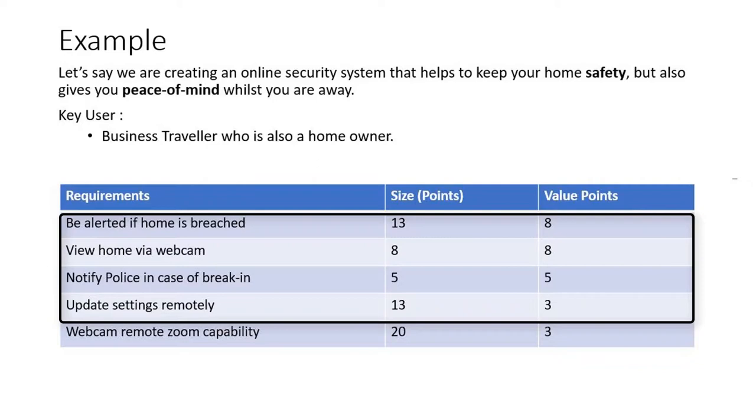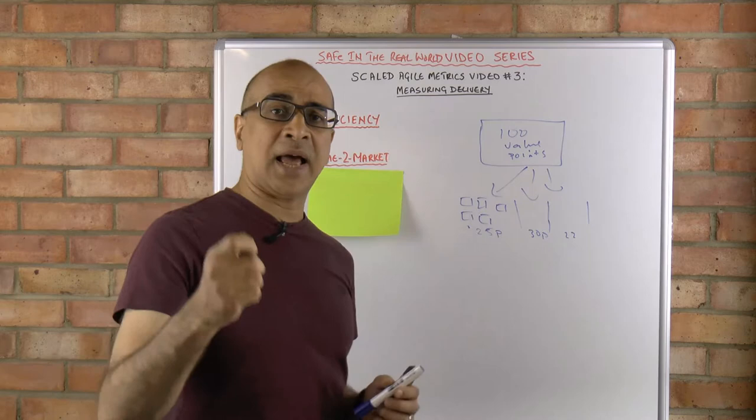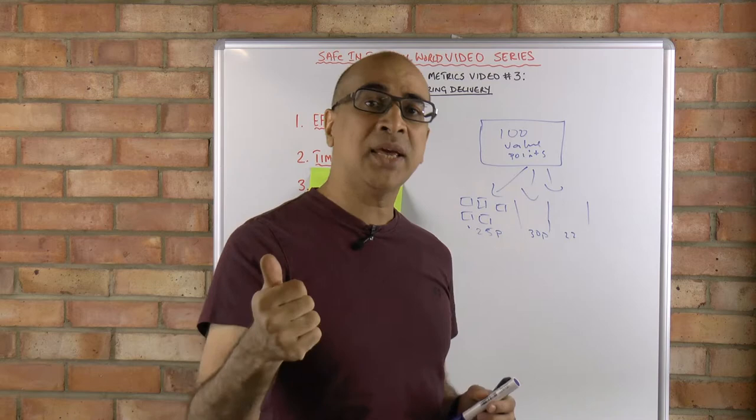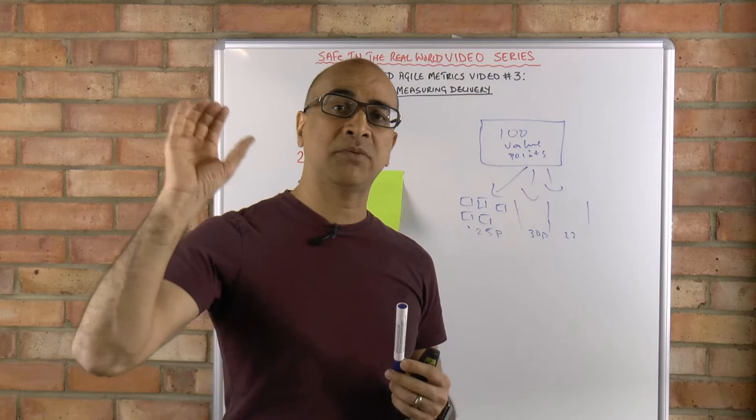So that's a general idea of how we can use value points to measure our delivery effectiveness. Now the second thing we can look at is our time to market. In an agile program, our ability to release stuff quickly and frequently is so important. One of the key measures we want to be looking at is how long it's taking our features or requirements to be released into the market and into the hands of the customer.